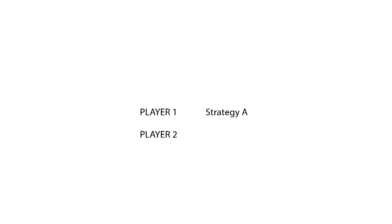Let's say we want to know the outcome of a game with two players, player 1 and player 2. Each player will be able to choose from various alternatives called strategies. For simplicity's sake, let's consider only two strategies, strategy A and strategy B. Player 1 starts playing this game and therefore has to make a decision. This is represented by a decision node — points in time when players have to make decisions about which strategy they'll choose.